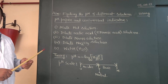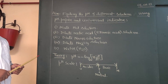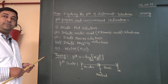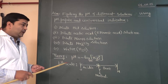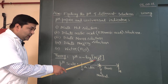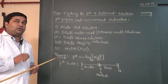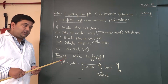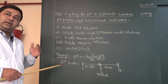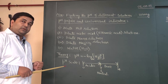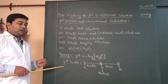Before going to the practical part, at first we will focus on the theoretical part. What is pH? pH is the negative logarithm of hydrogen ion concentration present in the solution. Depending on hydrogen ion concentration we can classify solutions into three categories: acidic, basic, and neutral.